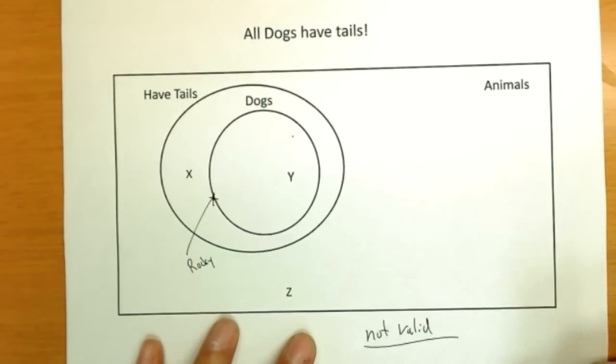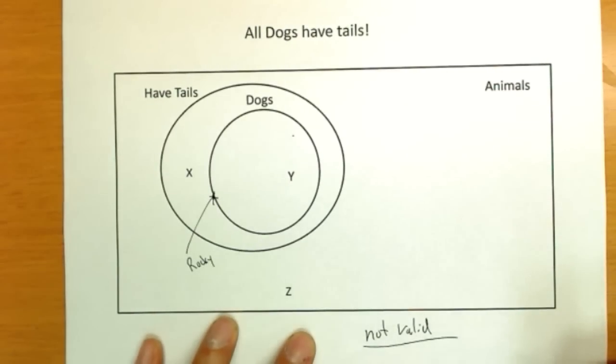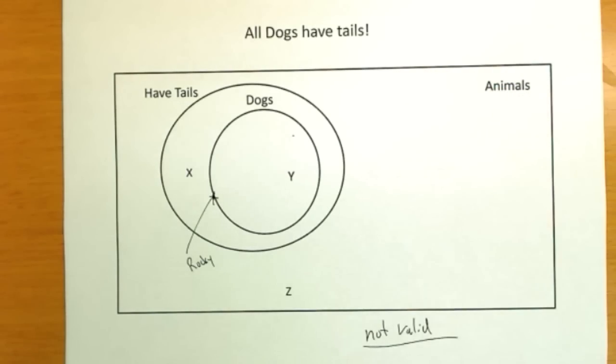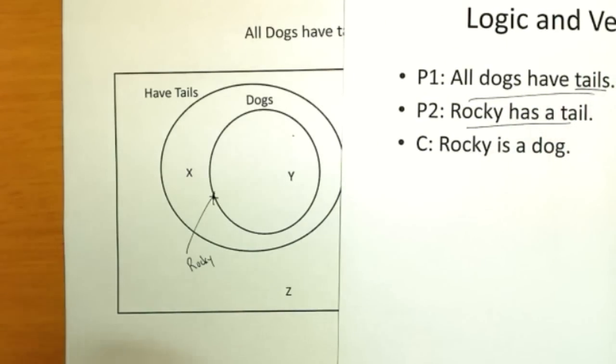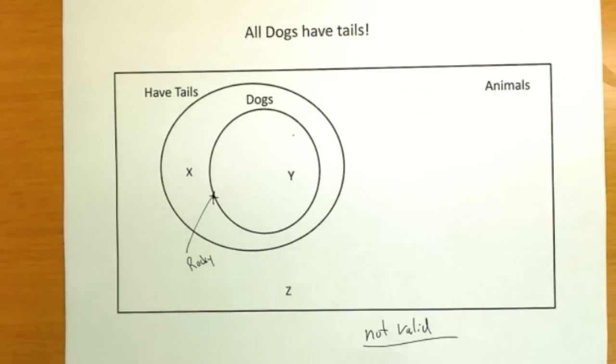Now I know you guys know Rocky's a dog. You've seen pictures of him in class. If you've come by my office, you've seen pictures of Rocky and me all over the office. You know the picture of him right here on my schedule. So clearly he's a dog. But that's not the point. We can't use that information. We're using the information in our premises. Dogs have tails and he has a tail. That does not prove he's a dog. So it's not valid.